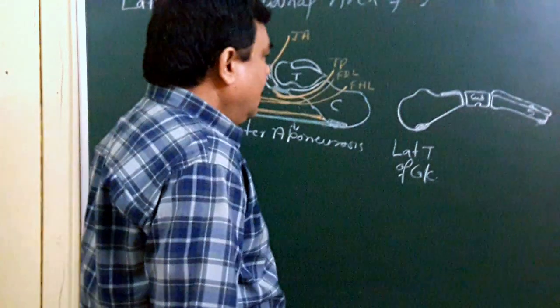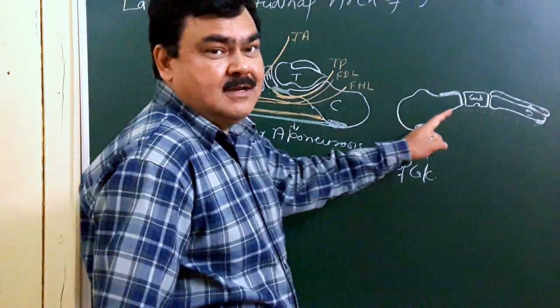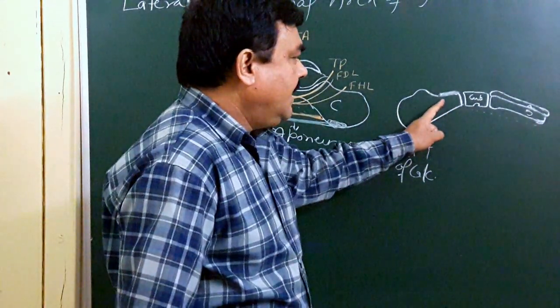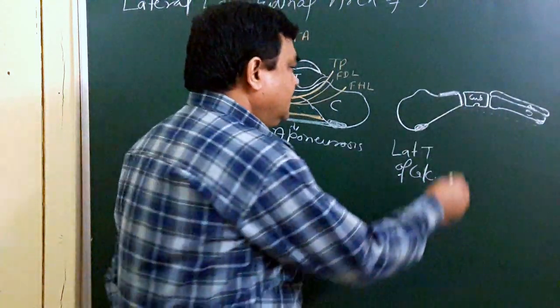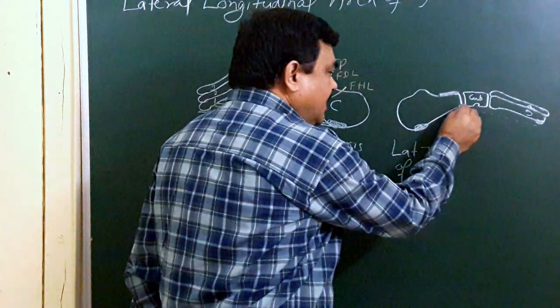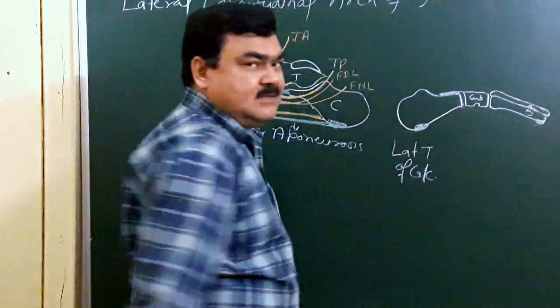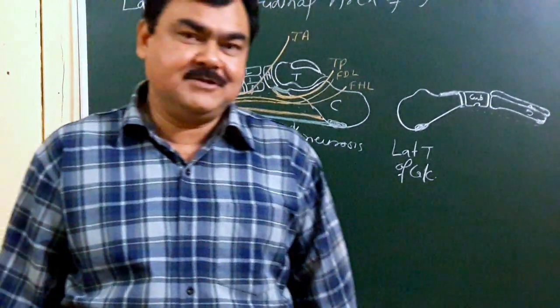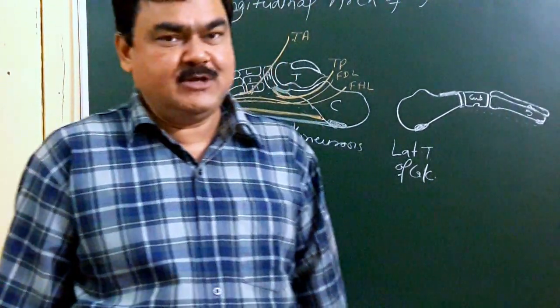The main joint of the lateral longitudinal arch is the calcaneum-cuboid joint. This calcaneum-cuboid joint is the principal joint of this arch.